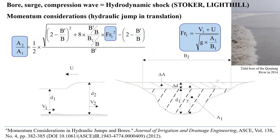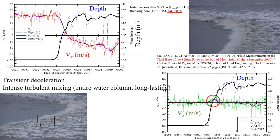In this expression, on the left hand side we have the ratio of the conjugate cross-section area. On the right hand side, some terms like B' and B are directly related to the shape of the water course. While this expression is theoretically correct, it does not provide fine detail on the turbulent processes. We need field measurements like this one. This is field work we did in 2010 in the Bay of Mont Saint-Michel, western France, with colleagues from the University of Caen. Both graphs show for about 10 seconds the variation with time of the water depth, longitudinal and vertical velocity components. We see a transient deceleration and very intense turbulent mixing.